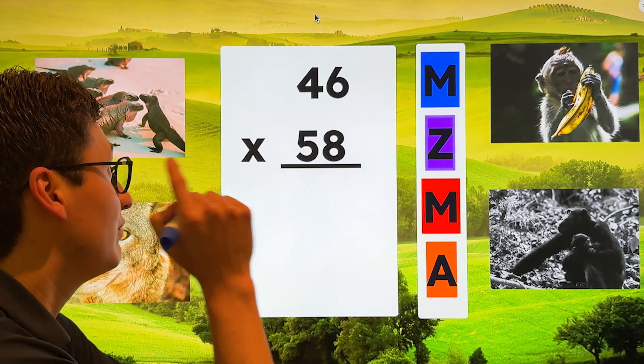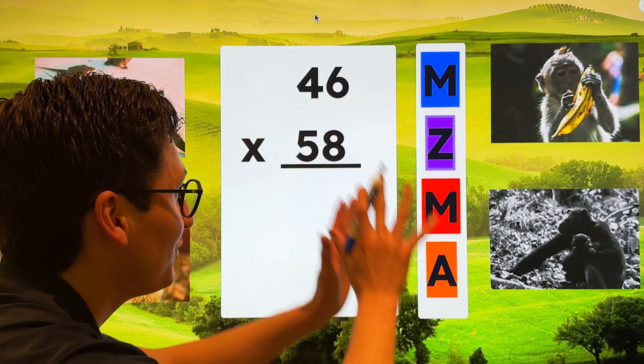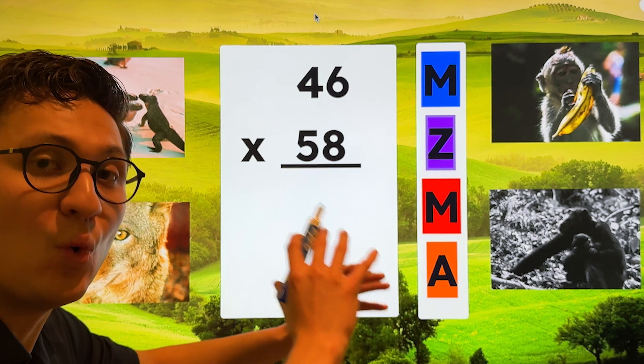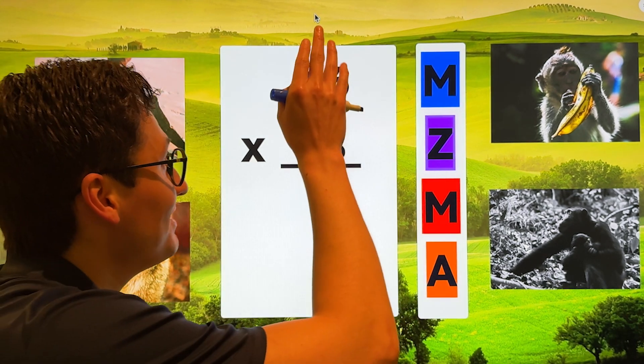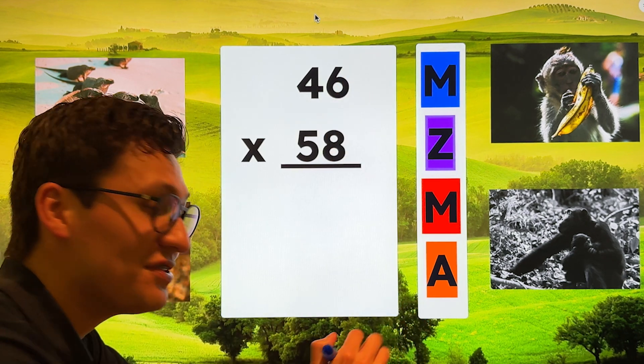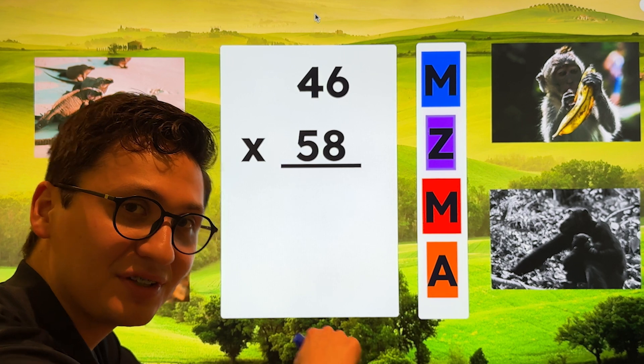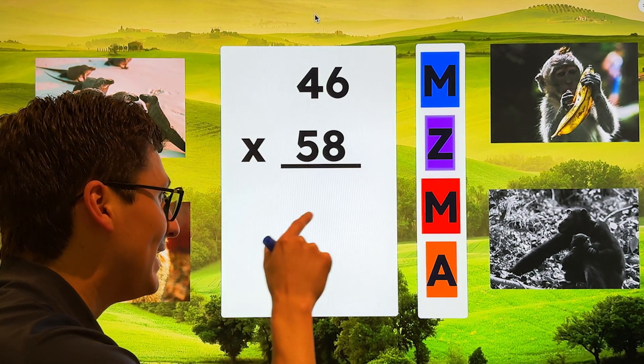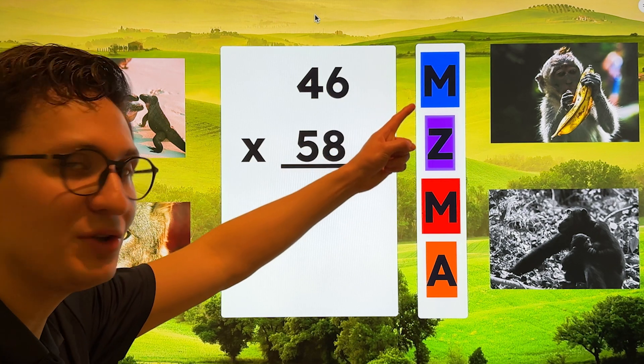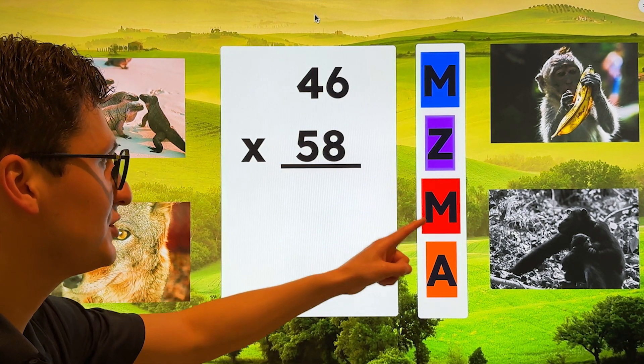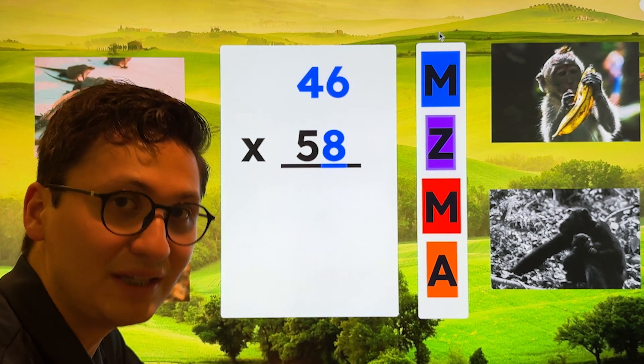Now we have 46 times 58. I'm not going to tell you what those letters stand for or the easy way to remember. Now I'm going to ask you, what is an easy way to remember these four steps? Exactly. Many zoos, many animals. Now, what do the letters stand for? Multiply, zero, multiply, add. Step one, multiply.